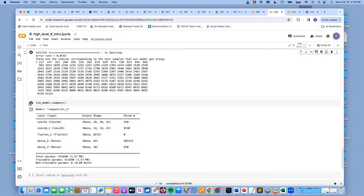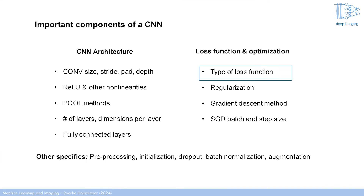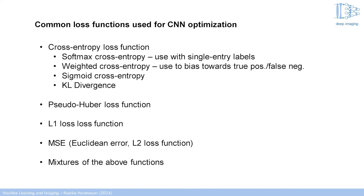Next class we will get into loss functions and ways to perform gradient descent. As you saw, it's all summarized by the model.compile function — you just change small terms. There are a bunch of loss functions available in TensorFlow; this list isn't exhaustive but covers popular ones. You just change from sparse categorical cross-entropy to any of these. The cross-entropy variants are most popular for classification tasks.